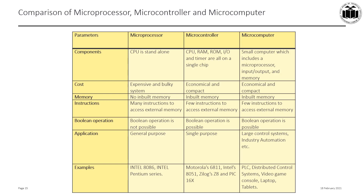In terms of application: microprocessors serve general-purpose applications; microcontrollers serve specific or single-purpose applications; microcomputers are used in large control systems and industrial automation. Examples of microprocessors include Intel 8086 and the Intel Pentium series. Examples of microcontrollers include Motorola 6811, Intel 8051, Zilog's Z8, and the PIC series. Examples of microcomputers include video game consoles, laptops, and tablets.